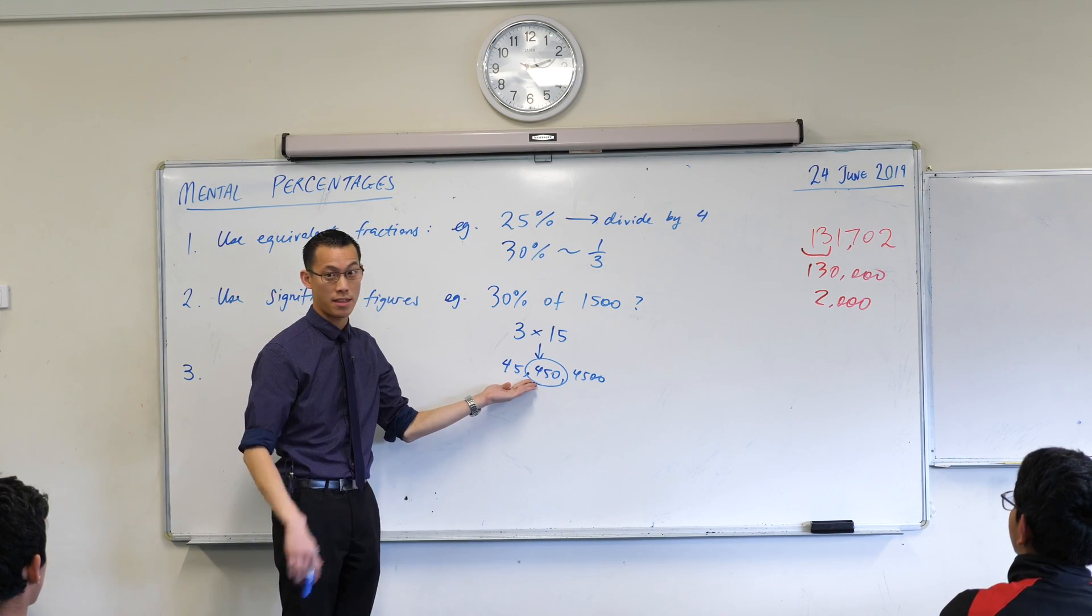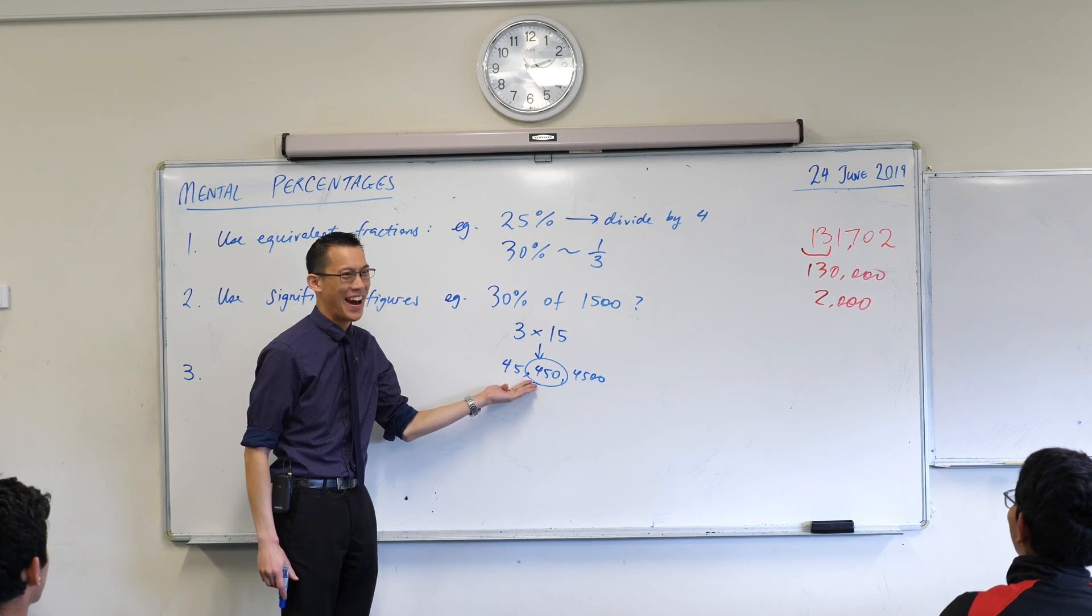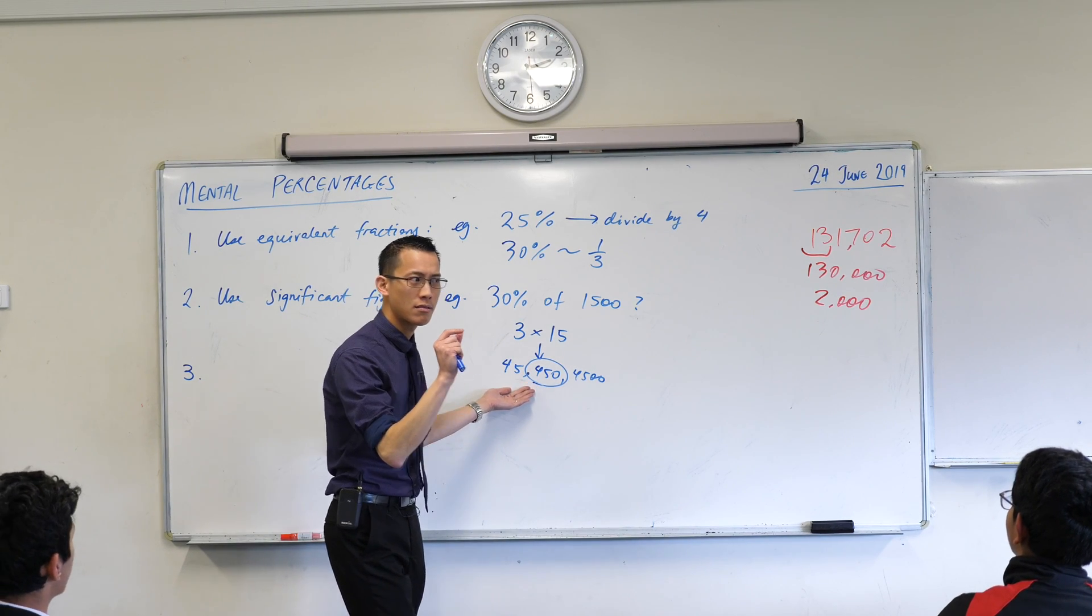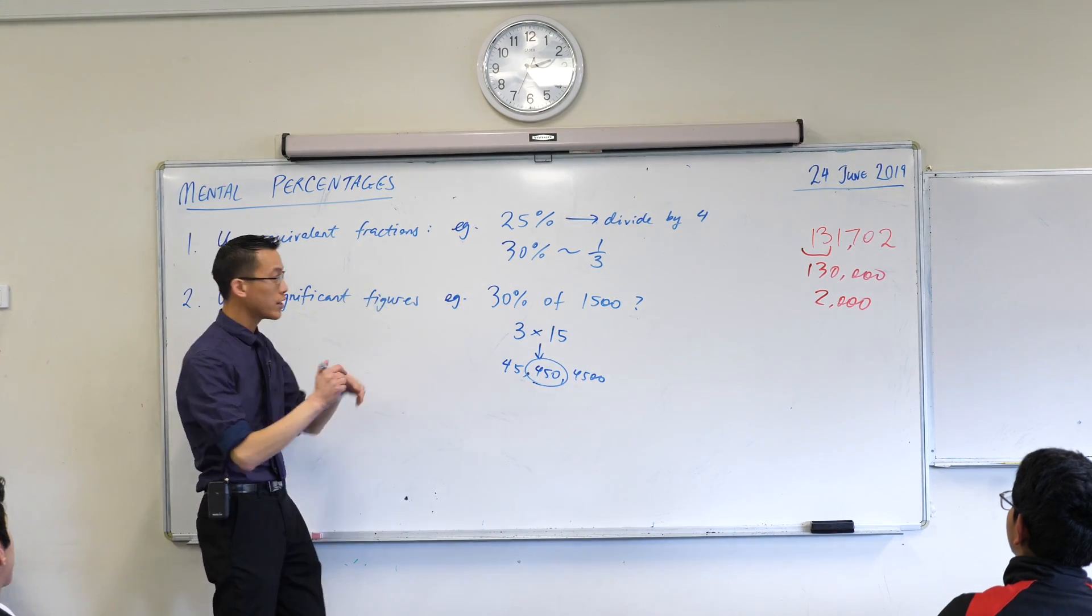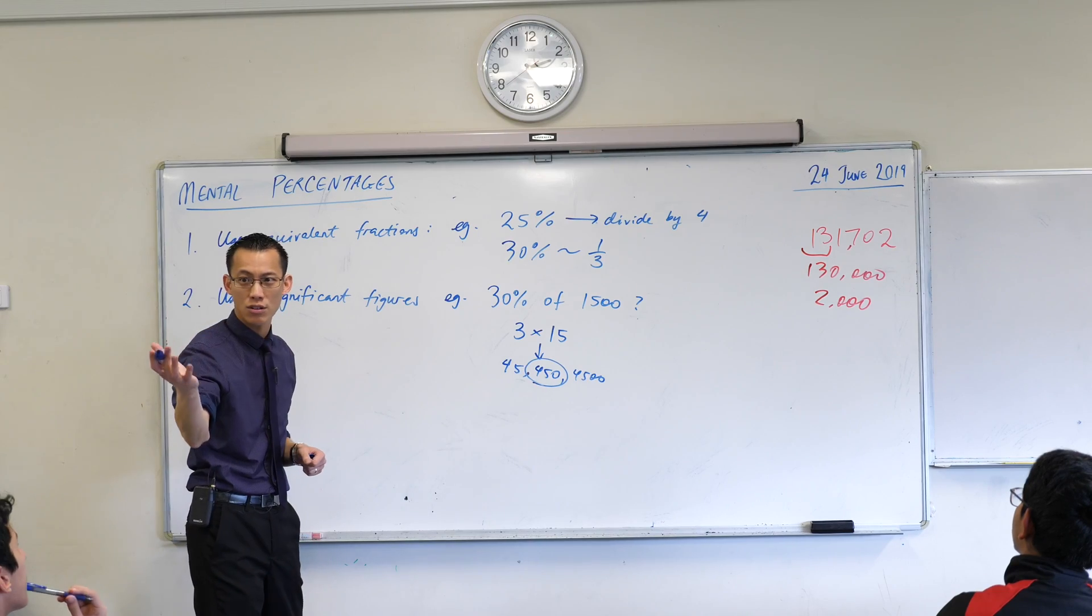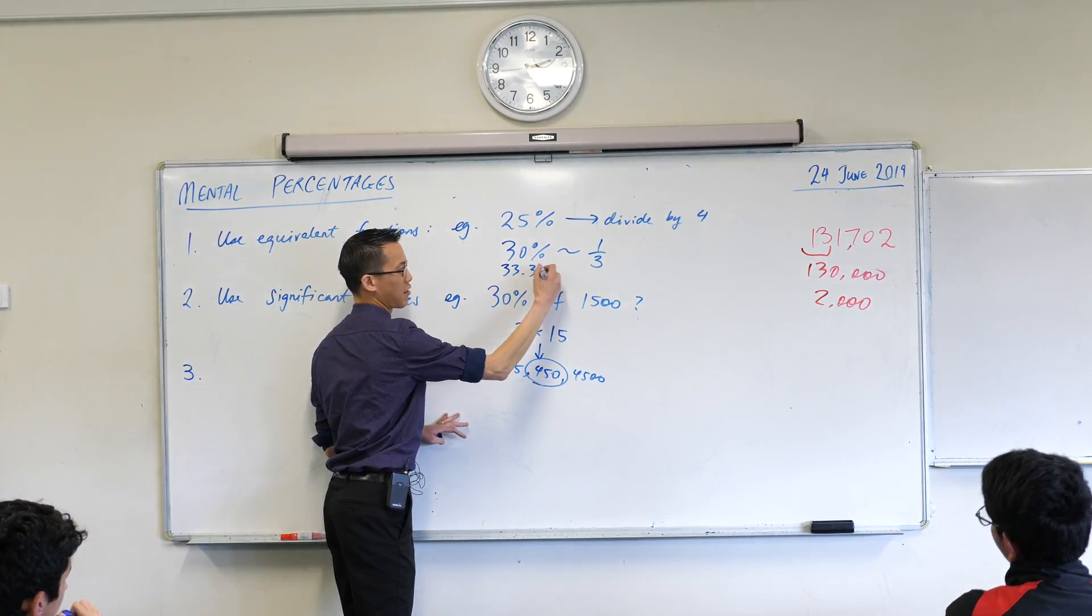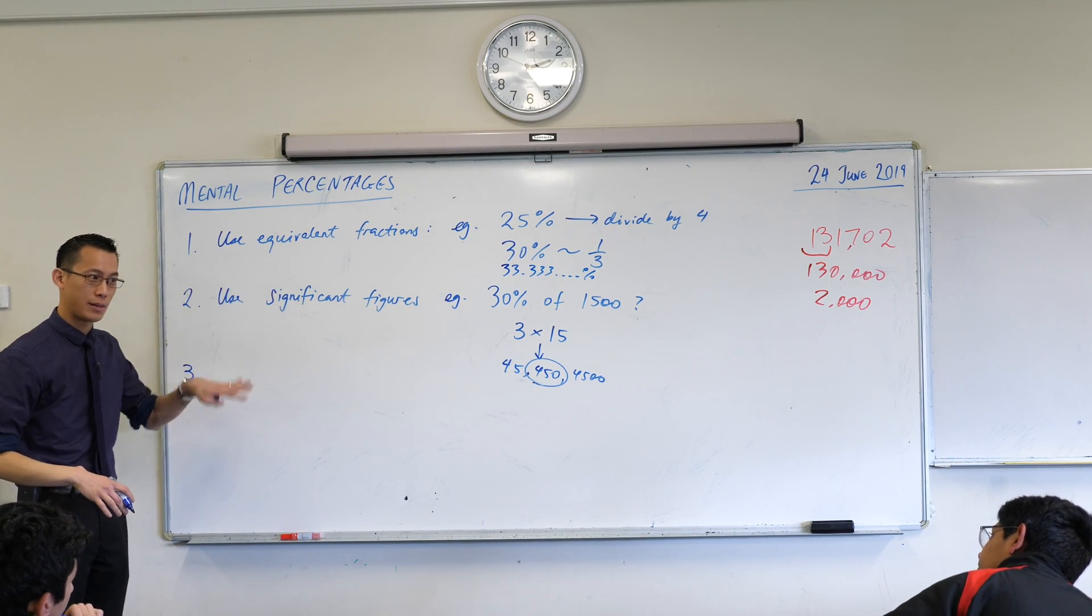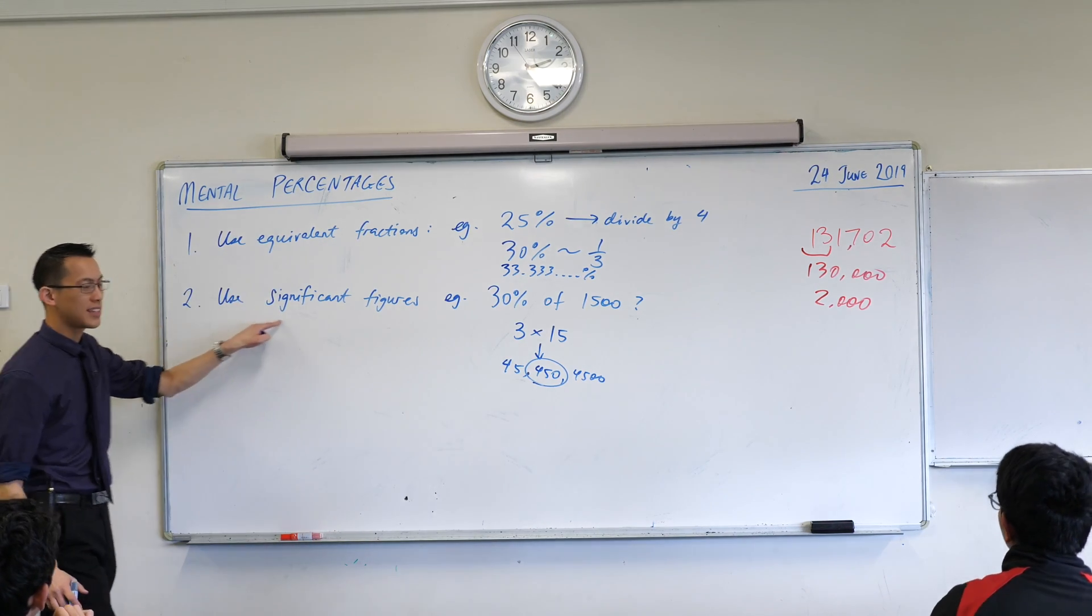Leah's logic there is so important. 45 out of 1,500, this is a tiny proportion of this group, whereas 4,500 is bigger than what we started with. This one's right here in the middle. And as Leah said, 30%, it's about a third. Does that feel like about a third of 1,500 to you? It should because it is about a third. It's a bit less than that. Why is it a bit less? What would be closer to a third? 33 and lots of threes percent, that would be exactly a third. 30% is just a little bit less than that.